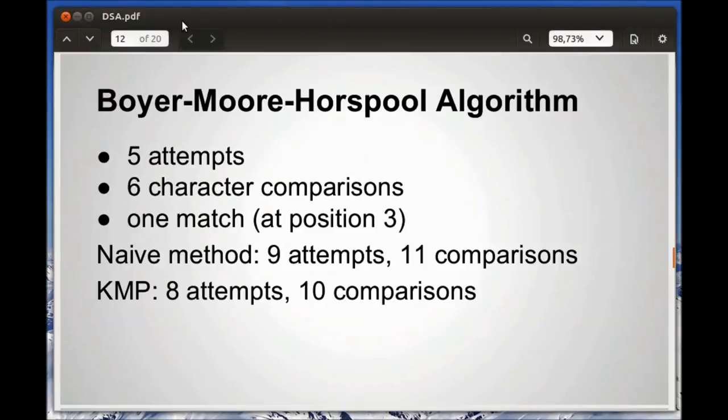Therefore, it took us 5 attempts when we shifted the pattern and 6 character comparisons to determine that the only match for our pattern in the text is at position 3. It would have required the Naive method to make 9 attempts and 11 comparisons, and the Knuth-Morris-Pratt 8 attempts and 10 comparisons.